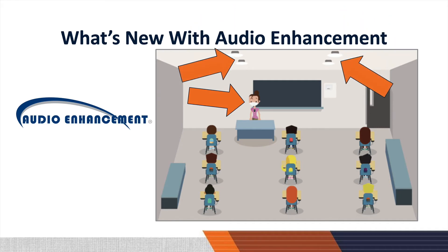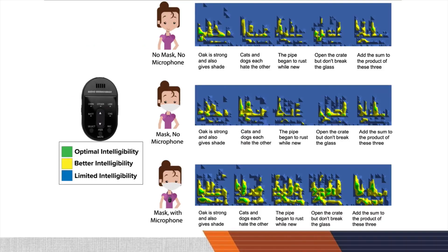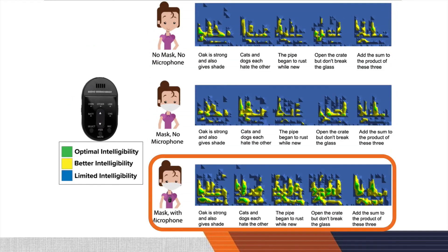With the addition of a 3.5 millimeter cable running from the receiver output to the computer mic in, both groups of students will be able to hear clearly what is being said through the audio enhancement system.